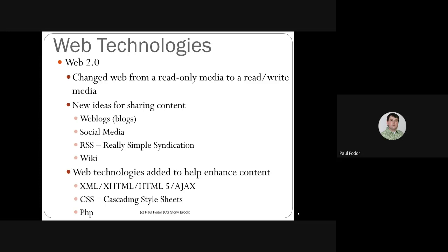New web technologies were added to enhance content. Initially there was only HTML, but because pages were manually developed there were many errors, and browsers accepted these as normal. One of the first steps was to create a more structured language called XML, which required all documents to be well-formed. The XML format had to declare its version, and every open tag had to be closed by a close tag within the same block — you cannot have interleaved blocks.